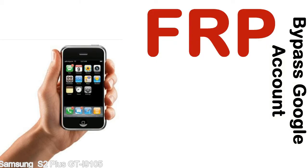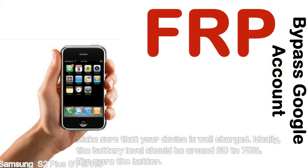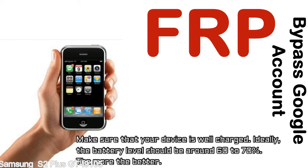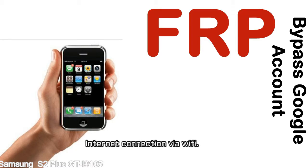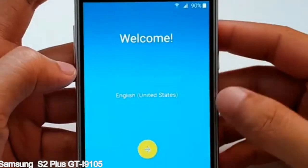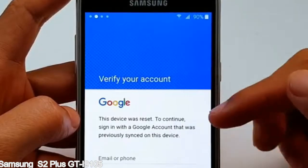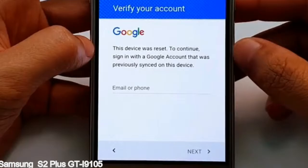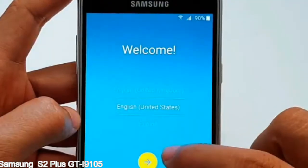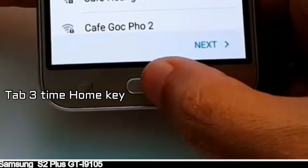Before starting: one, make sure that your device is well charged. Ideally the battery level should be around 60 to 70 percent — the more the better. Two, internet connection via WiFi. Here is a step-by-step guide on how to bypass the Google account on your Samsung Galaxy device.